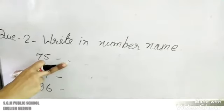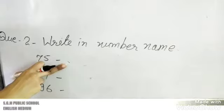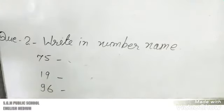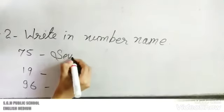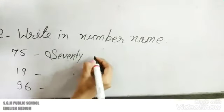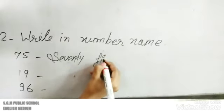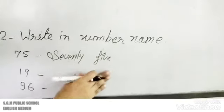S, E, V, E, N, T, Y - seventy. F, I, V, E - five. S, E, V, E, N, T, Y - seventy. F, I, V, E - five. Seventy-five.